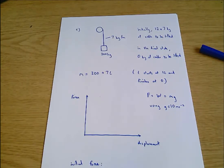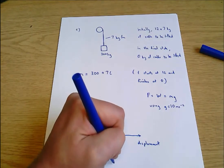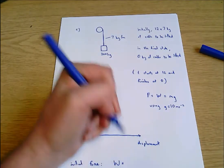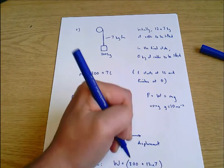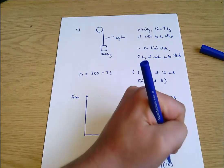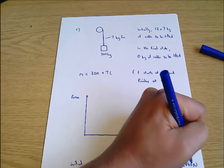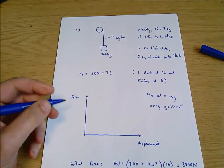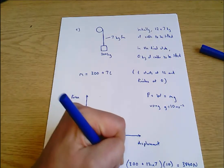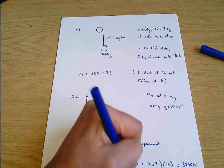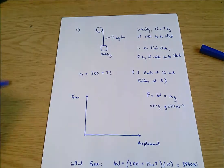12 times 7 is 84 kilograms. So we've got W equals 300 plus 12 times 7 multiplied by gravity, which is 10. That equals 3840 Newtons when you multiply it through. The final force - now we no longer have to lift the cable, it's all reeled in. So this equals 300 times 10, which equals 3000 Newtons.